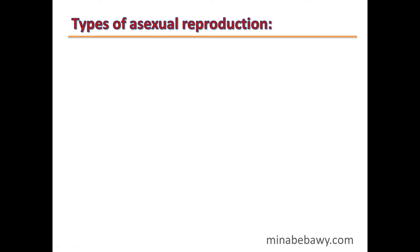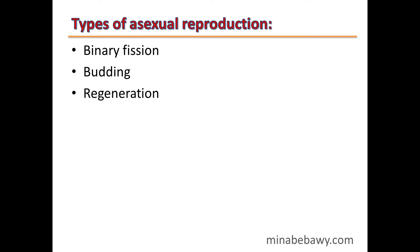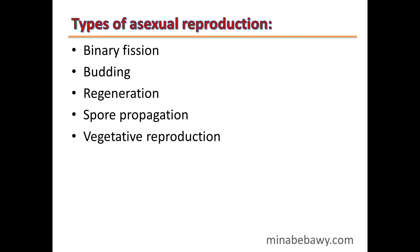There are five types of asexual reproduction: the first is binary fission, the second is budding, the third is regeneration, the fourth is spore propagation, and the final one is vegetative reproduction.